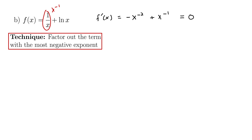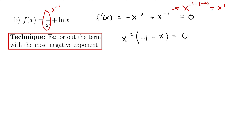Using the technique of factoring out the term with the most negative exponent, we factor out x to the negative 2. This leaves negative 1 plus x to the negative 1 minus negative 2, which is x to the 1, so simply plus x. So we get x to the negative 2 times the quantity negative 1 plus x equals 0.